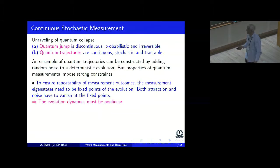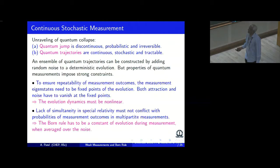The other part is that the description should not conflict with special relativity, which does not have any concept of simultaneity. So if there are multipartite measurements and they do not conflict with quantum results, the Bond rule has to come out as a constant of evolution during the measurement. It does not change as a function of time. And such a description exists, and that is what Jisan constructed in 1984.